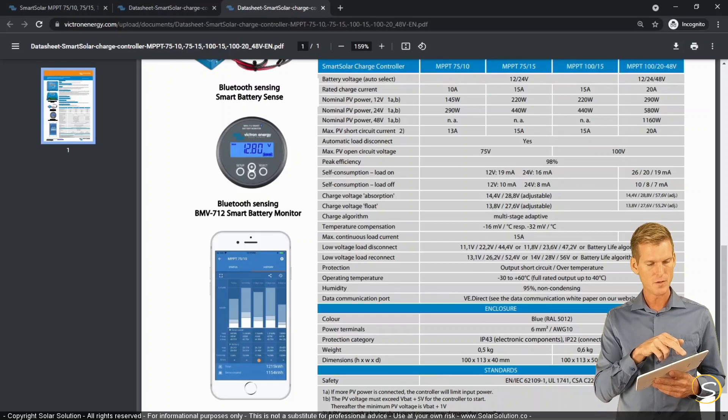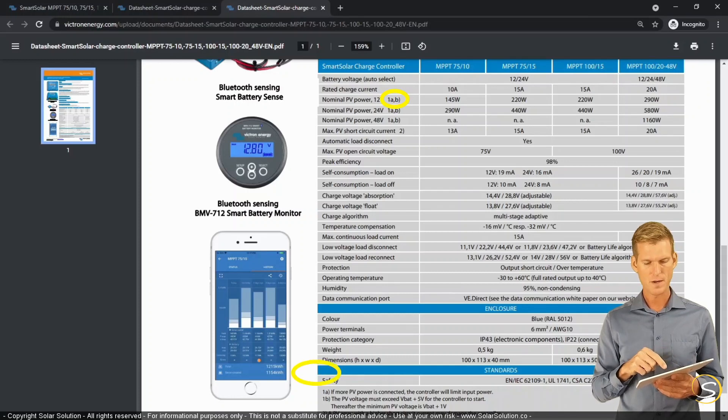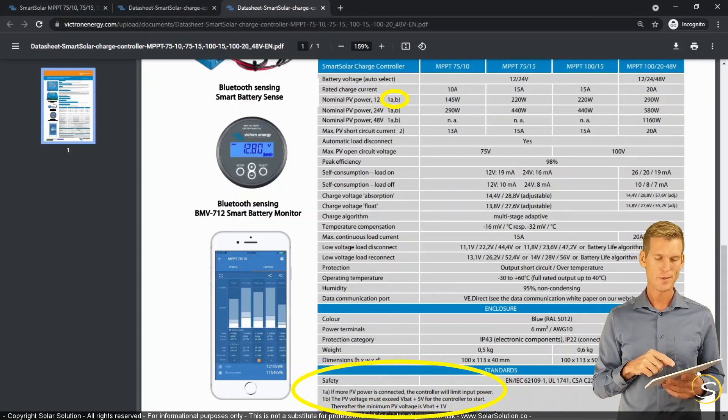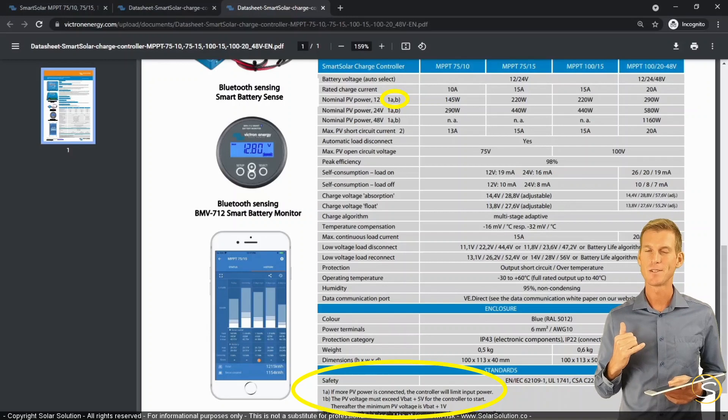Now you can see that there's a note placed here, 1A and 1B. And I want to show you what it says. 1A, if more PV power is connected, the controller will limit the input power. So this is what we just discussed.